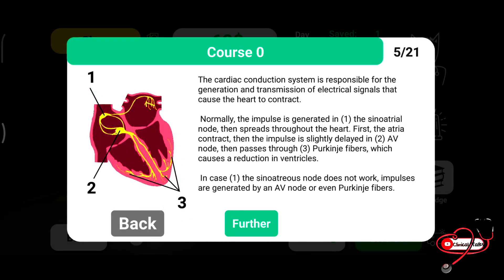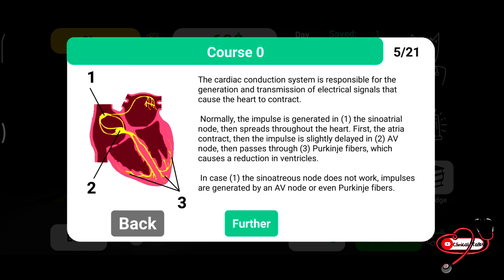Let's expose the cardiac conduction system. You can see numbers 1, 2, and 3. The cardiac conduction system is responsible for the generation and transmission of electrical signals that cause the heart to contract. Normally, the impulse is generated in number 1, called the SA node or sinoatrial node. It spreads throughout the heart — first atrial contraction occurs, then the impulse is slightly delayed at number 2, the AV node.